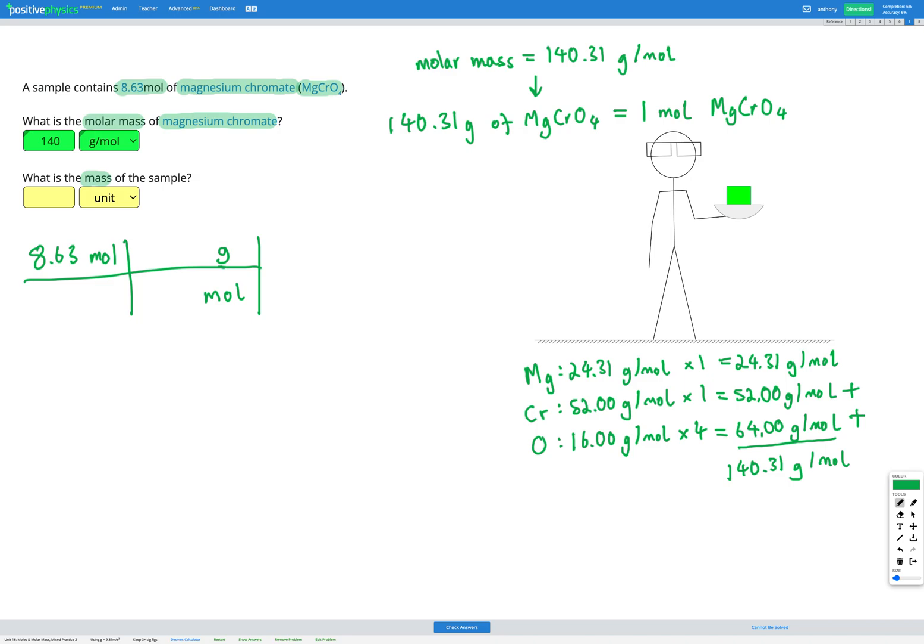And then we need to put in our numbers so the top and bottom of the fraction are equal according to our conversion factor. So from our conversion factor, we have one mole is equal to 140.31 grams. Now all we need to do is multiply everything on the top, divide by everything on the bottom, and cancel out units that are the same top and bottom, which are moles. So that gives us 8.63 multiplied by 140.31 divided by 1 grams.